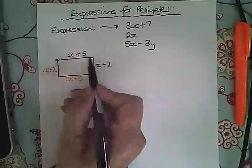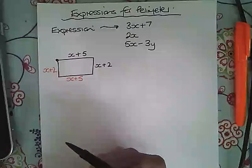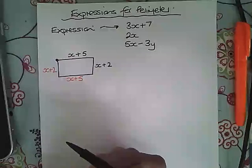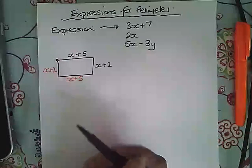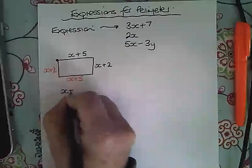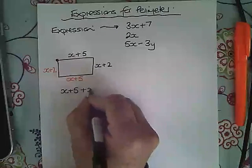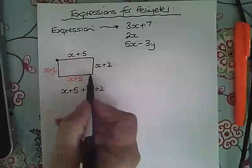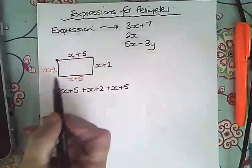The first thing we need to do if we're asked to find the expression for the perimeter is to write down all of these sides added together. You don't need to do anything fancy, you just need to write them down with an addition sign in between them and then we'll tidy it up afterwards. So we start off by going along here which is x plus 5, down here add x plus 2, along here add x plus 5, and finally back up here we add x plus 2.